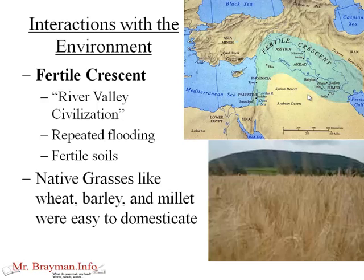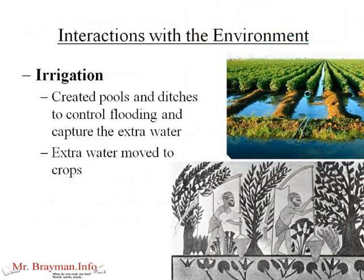Part of these interactions with the environment are native grasses like wheat, barley, and millet — these grasses are very easy to domesticate. People noticed that as they got seeds from certain plants and planted them, they got more wheat or barley, more food — a food surplus. And that's civilization right there. The other big thing is irrigation — artificially bringing water to crops. Early irrigation in this area was about creating pools and ditches to control flooding and capture extra water, since the Tigris and Euphrates sometimes have too much water and sometimes not enough. People figured out if they could bank that water and let it out a little at a time, they could get their crops to grow well all year long.